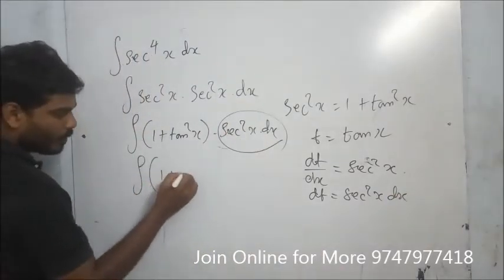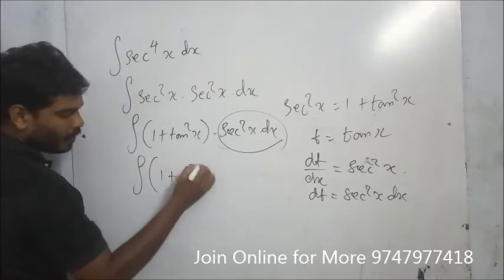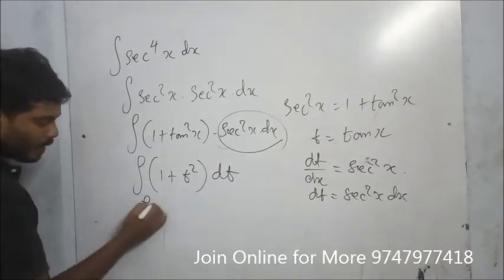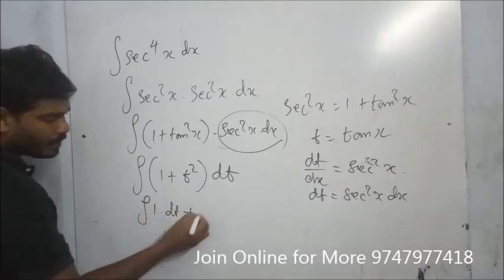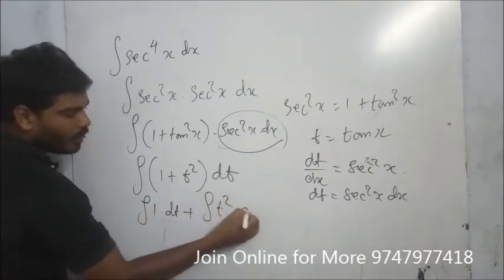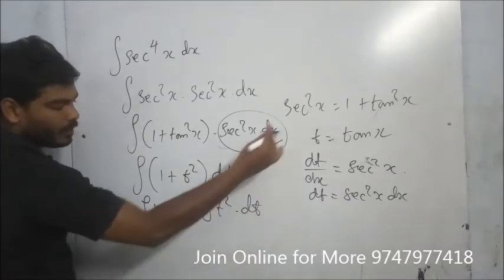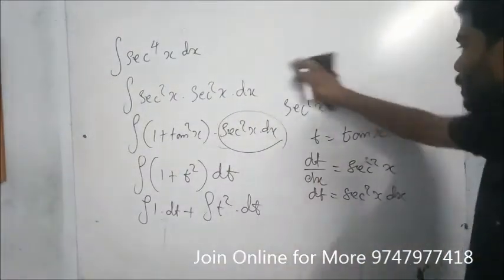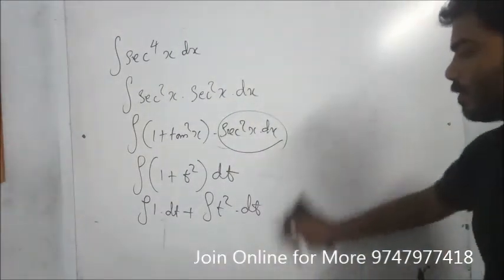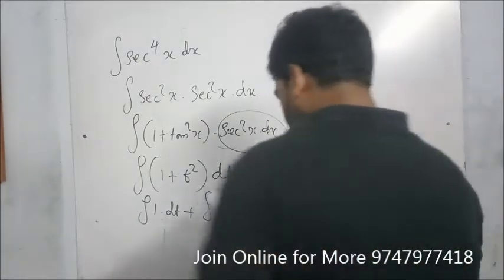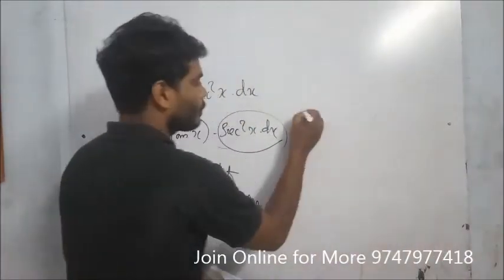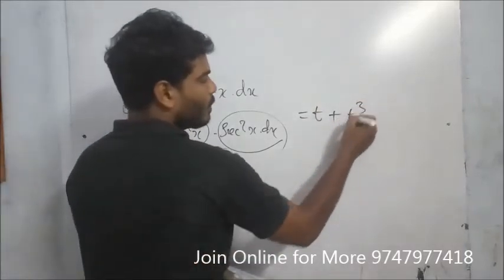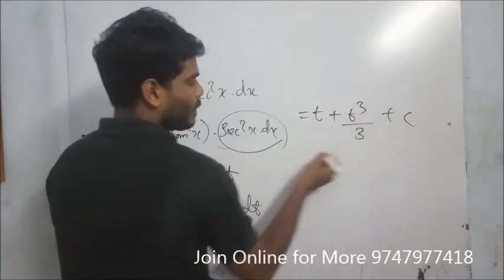So the integral becomes the integral of (1 plus t²) dt. Splitting: integral of 1 dt plus integral of t² dt. The integral of 1 dt equals t, plus t³ divided by 3, plus c.